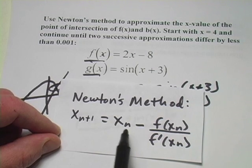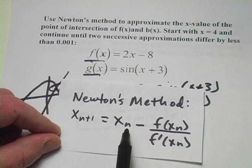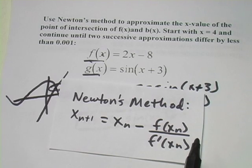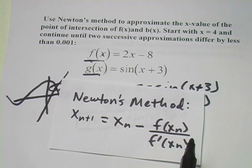And then we just keep doing this over and over again, taking x sub n+1 and plugging in for x sub n and continuing until we get something that is close enough to what we want our answer to be.